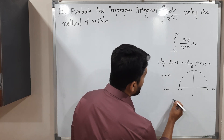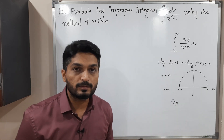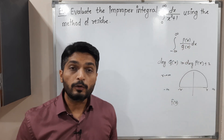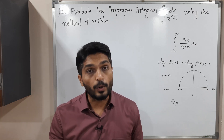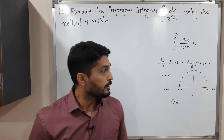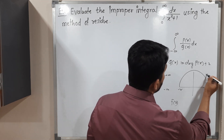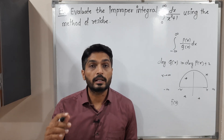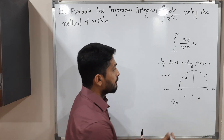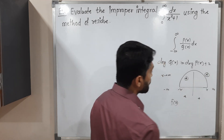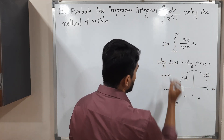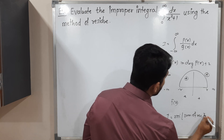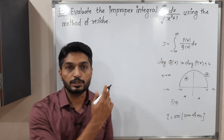We consider a function f(z). To find f(z), just replace x by z everywhere. We find the singular points of f(z) — that means points where the function is not analytic. Singular points can lie in the upper or lower half of the plane. We give importance to the singular points lying in the upper half of the plane. We find residues at those singular points, and the value of the integration is 2πi times the sum of residues.